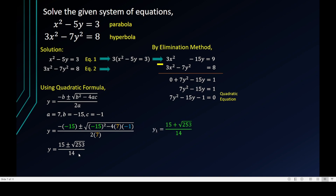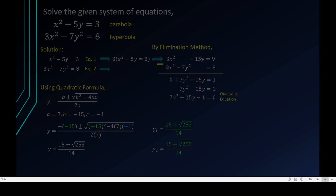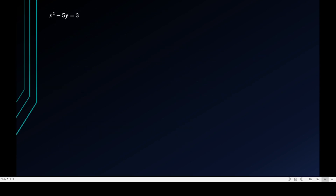Simplifying, you get 15 plus or minus the square root of 253, all over 14. So y₁ equals (15 plus √253) / 14 using the addition, and y₂ equals (15 minus √253) / 14 using the subtraction.